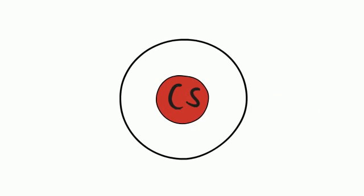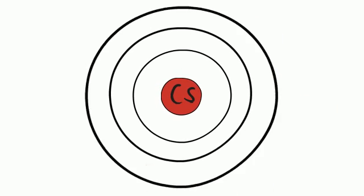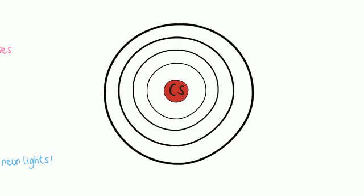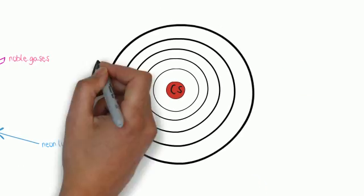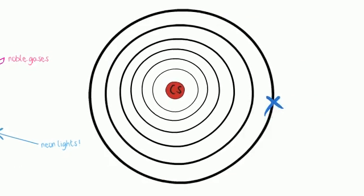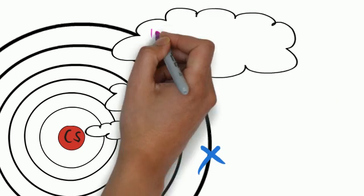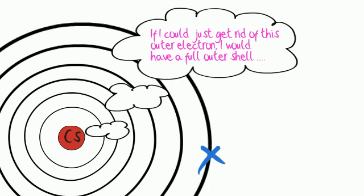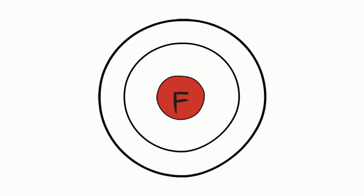The further away the outer electron is from the nucleus, the easier the electron is to lose. So caesium is a very reactive metal. If it loses its outer electron, it will then have a full shell. The closer the electrons are to the nucleus, the easier the electrons are to gain. So fluorine is a very reactive gas — it reacts with almost anything in order to gain the electron it needs to get a full shell.